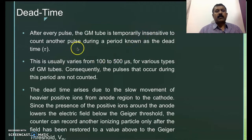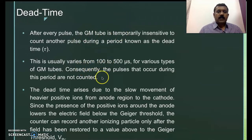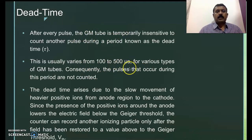The typical value of this dead time for various types of GM tubes ranges from 100 microseconds to 500 microseconds. Consequently, the pulses that occur during this time are not counted.